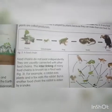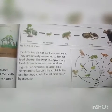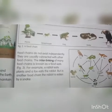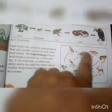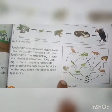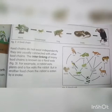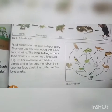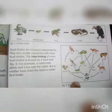Food chains do not exist independently — they are usually connected with other food chains. The interlinking of many food chains is known as a food web. For example, a rabbit eats plants and a fox eats the rabbit. But in another food chain, the rabbit is eaten by a snake. This is how a food web is formed.